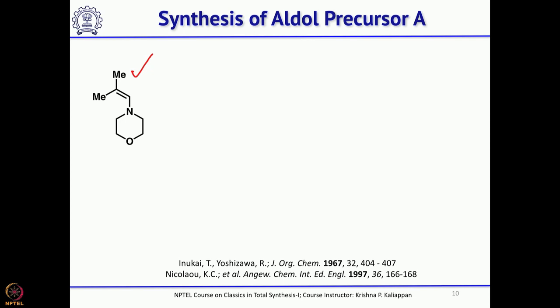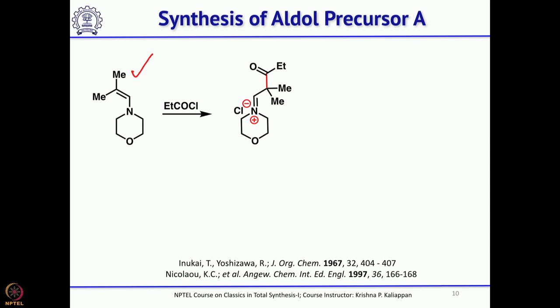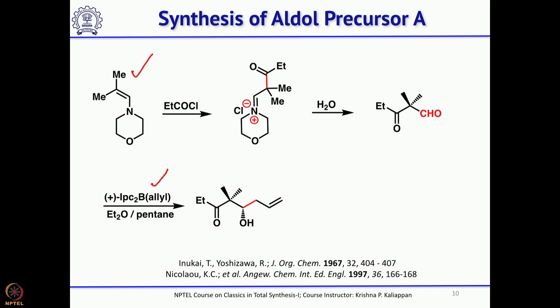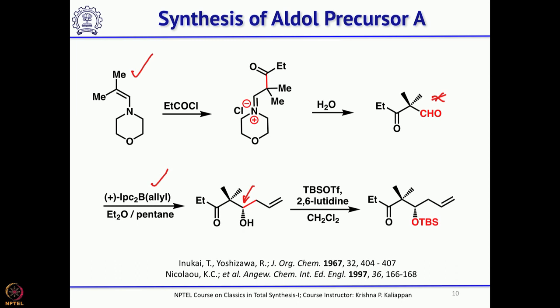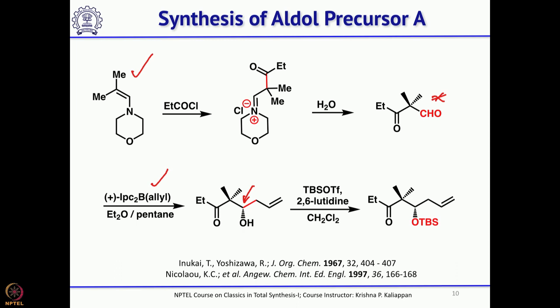They started with isobutyraldehyde. Isobutyraldehyde on treatment with morpholine forms the enamine. This enamine upon acylation with propanoyl chloride gave an intermediate which upon hydrolysis gave the beta-keto aldehyde. Then chiral allylation was done using Brown's allylboron reagent — a chiral reagent derived from alpha-pinene, well known for introducing a chiral center upon addition to aldehydes. Depending on whether R- or S-alpha-pinene is used, the corresponding chiral center is obtained. One chiral center is introduced and that alcohol is protected as a TBS ether.